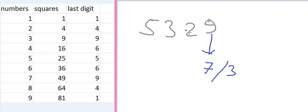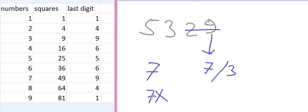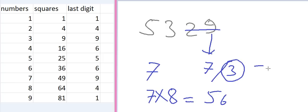Now for the second digit: cut the last two digits and we're left with 53. Looking at the squares — 1, 4, 9, 16, 25, 36, 49, 64 — we find that 49 is less than 53 but 64 is greater, so we take 49. Since 49 is the square of 7, our second digit is 7. Now multiply 7 by the next number, 8: 7 times 8 equals 56. Since 53 is less than 56, we take the smaller candidate, giving an answer of 73.